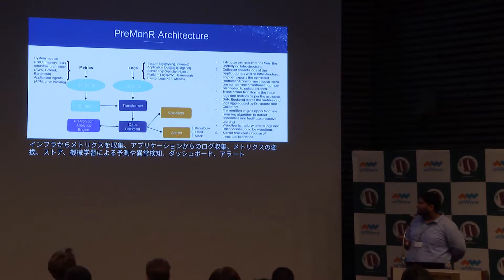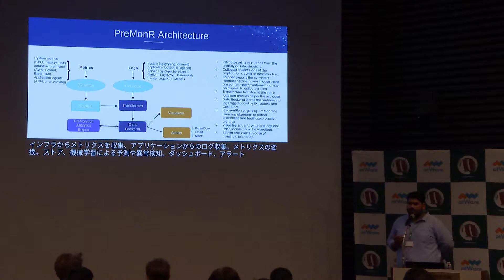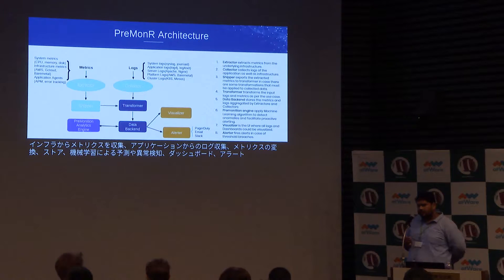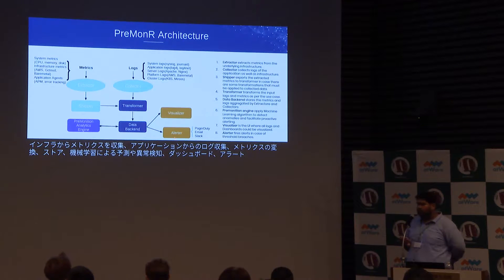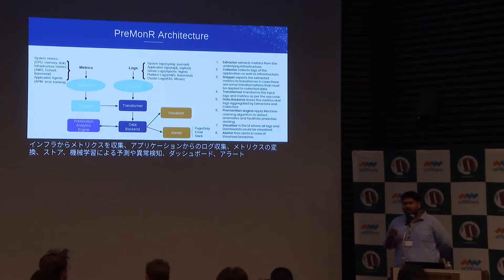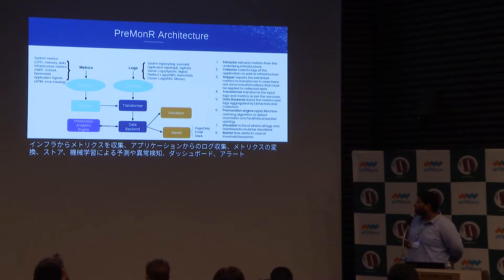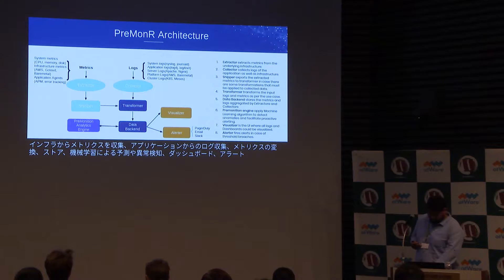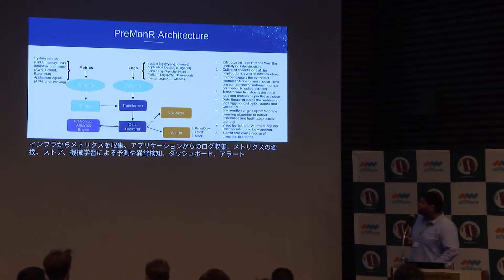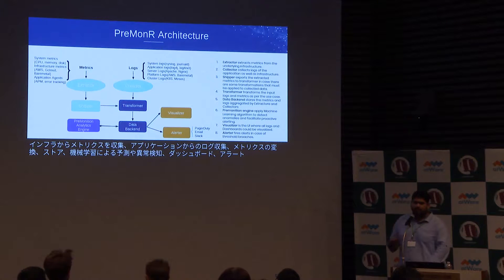The ML-applied analysis data is stored back into the data backend, which is then used by alerters to proactively alert that something might go wrong. We categorize alerts into two categories: premonition alerts — which say things have not gone wrong yet but there might be a chance something will — and normal plain vanilla alerts, which trigger when something has actually gone wrong. Our alerter can be integrated with PagerDuty, email, and Slack for a wide array of alerting platforms.